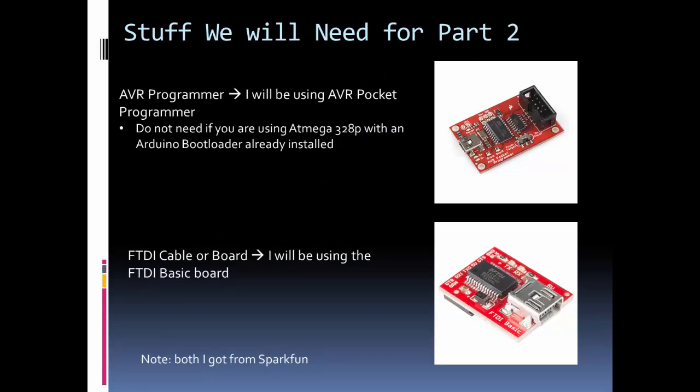Here's some stuff you're going to need for part two. I need an AVR programmer because when I order the ATmega328P, it's not going to have the Arduino bootloader on it. I have the AVR pocket programmer, which is really easy to use. If you want, you can order the ATmega328P chip with the bootloader on it - Adafruit sells that. You're going to pay more for it, like six bucks versus $3.50. But if you order it without the bootloader, you're going to need some type of programmer to put the Arduino bootloader on it. Also, we need an FTDI cable or board because we're not building that onto our development board. I'm going to use the FTDI basic board. Both of these boards I got at SparkFun. You can get them there or use an equivalent.